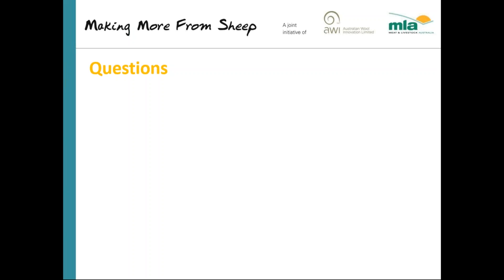A question from Scott: where in cost of production do we account for ewe replacement costs? Good question. If you are buying in ewes, the cost of those ewes gets added to your costs of production. We add the net trade between ewes — for example, if you're selling cull ewes at $100 but buying in young ewes at $150 or $200, that $100 loss per ewe goes onto your total costs of production.